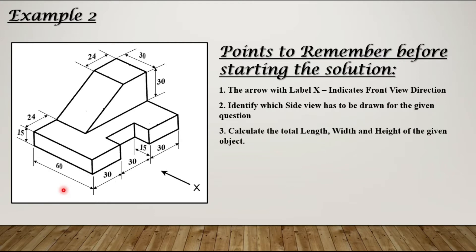Third, calculate the total length, total width and total height of the given object. So if you are calculating the length, this is the first, second and third. If you add them up, total length becomes 90 mm.